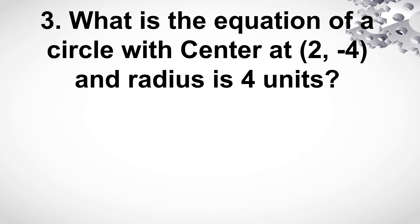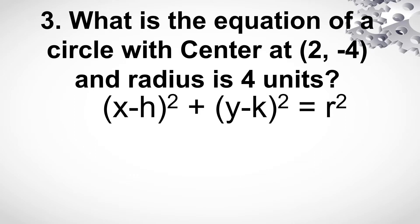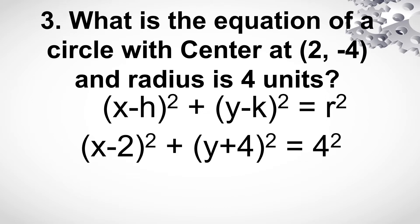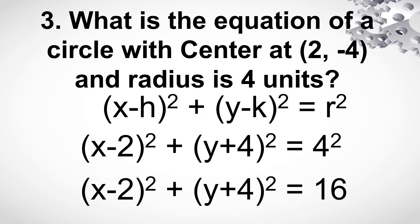Number 3. What's the equation of a circle with center at (2, -4) and the radius is 4 units? Using the same formula: x minus h squared plus y minus k squared is equal to r squared. So yung h nyo ay 2 at yung k nyo is negative 4. So magiging x minus 2 plus y minus minus 4 — naging y plus 4 squared — is equal to 4 squared. So that will give us the equation of the circle.